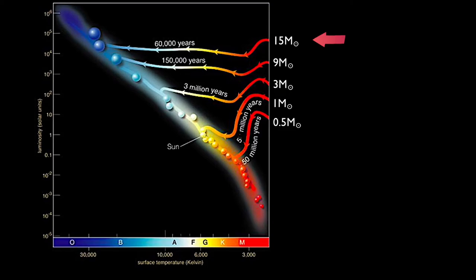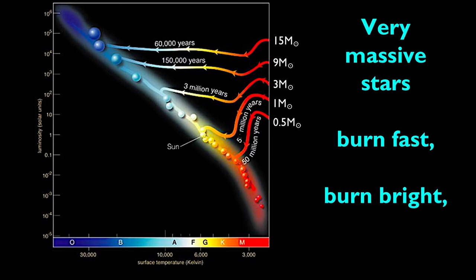Notice that the bigger the star, the shorter the time it takes to become a main sequence star. Very massive stars burn fast, burn bright, and die young. For the same reason, they form quickly too.